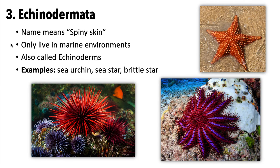The third phylum is Echinodermata, or echinoderms for short. Their name means 'spiny skin' because they generally have spines or spikes on them. They are only found in marine environments. Examples include sea urchins, sea stars, and brittle stars.